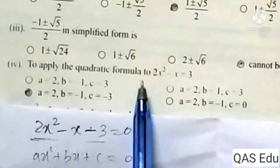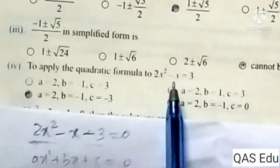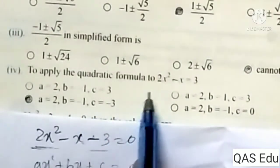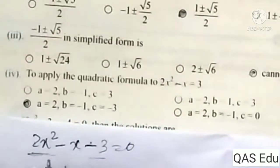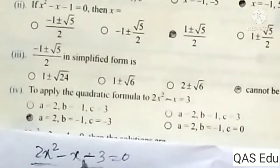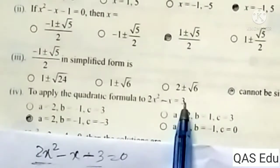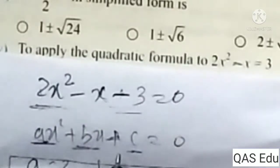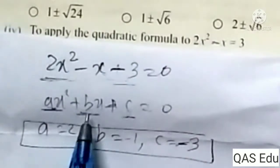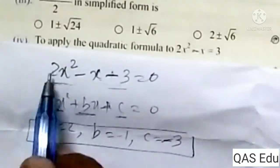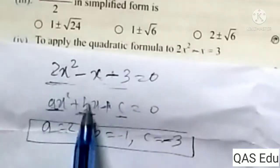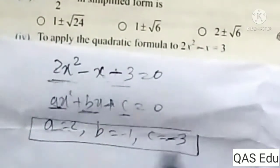To apply the quadratic formula to the equation 2x squared minus x equals 3, we need to write it in standard form. The equation is: 2x squared minus x minus 3 equals 0, with the right hand side equal to 0. That is the quadratic equation. We compare with the standard quadratic equation ax squared plus bx plus c equals 0. Comparing x squared terms: a equals 2, b equals minus 1, c equals minus 3.